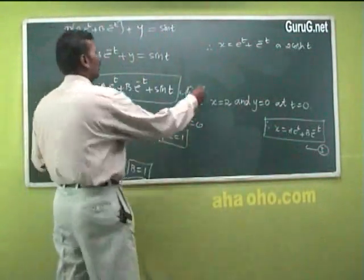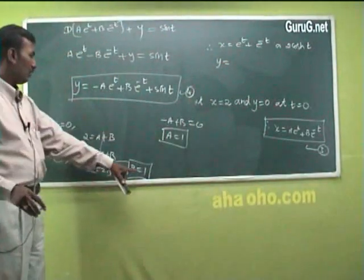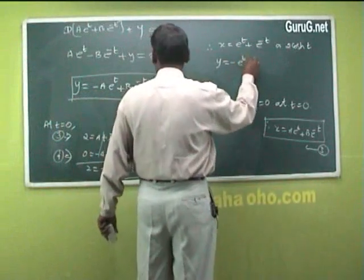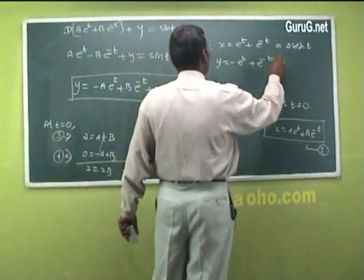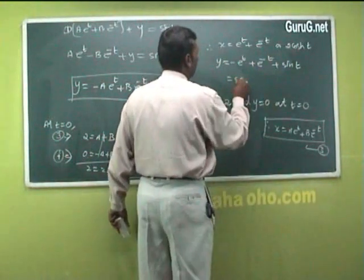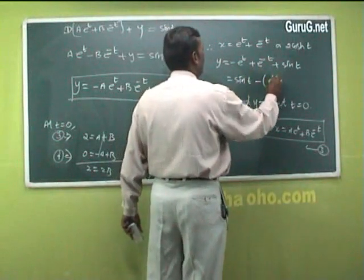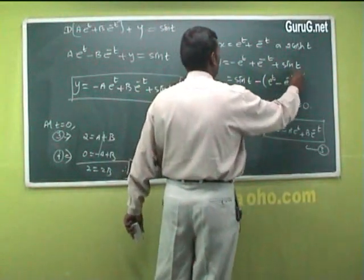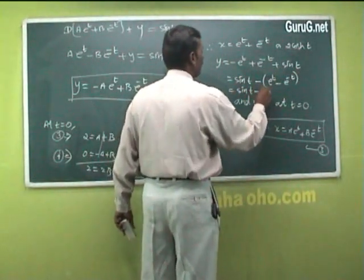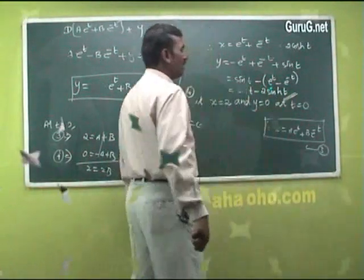Then y equal to minus e^t plus e^(−t) plus sin t, with a equal to 1 and b equal to 1. Taking minus outside: minus(e^t minus e^(−t)) is nothing but minus 2·sinh t. So y equal to sin t minus 2·sinh t.